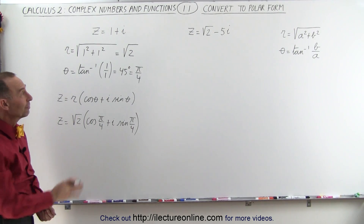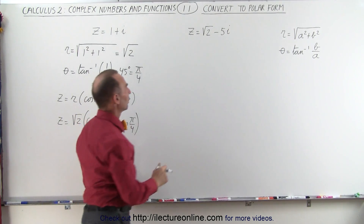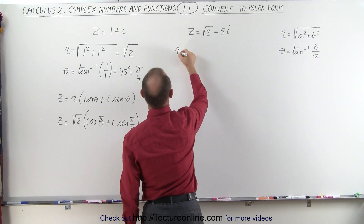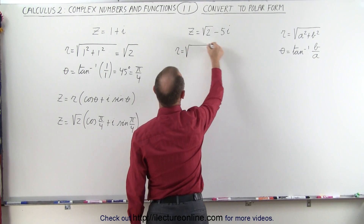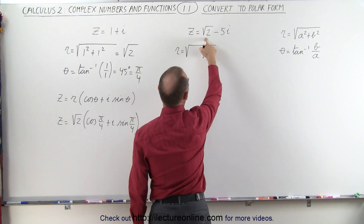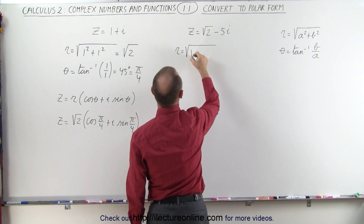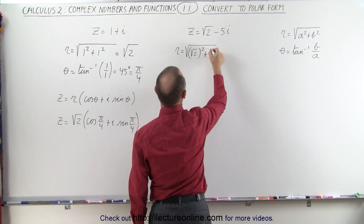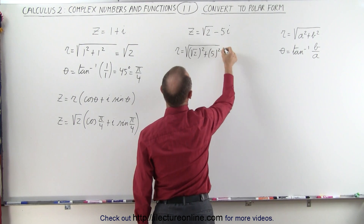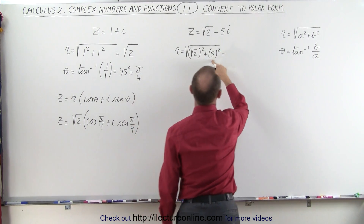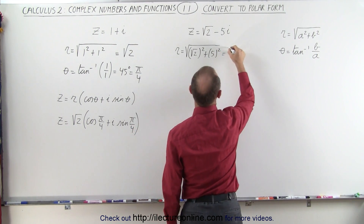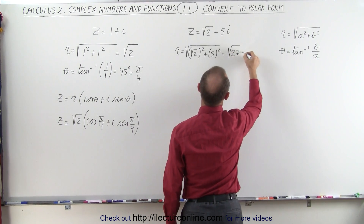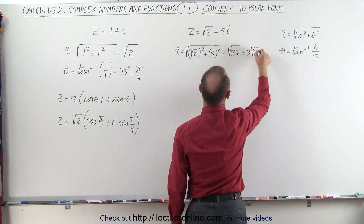Now we'll do the same for the second example. Again we need to find r. r is equal to the square root of a squared plus b squared. That would be the square root of 2 squared plus 5 squared, which is equal to 2 plus 25, or the square root of 27, which can be written as 3 times the square root of 3.